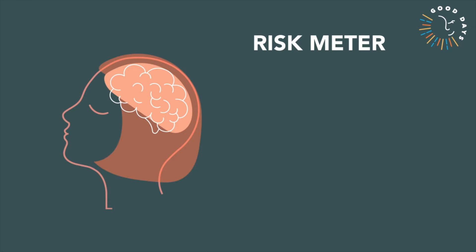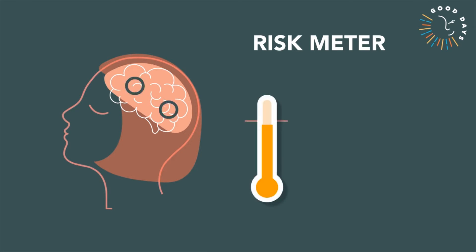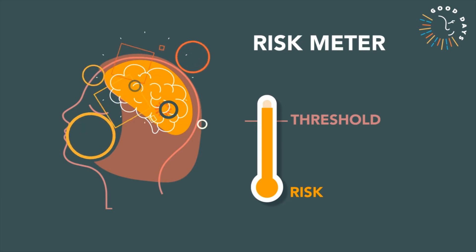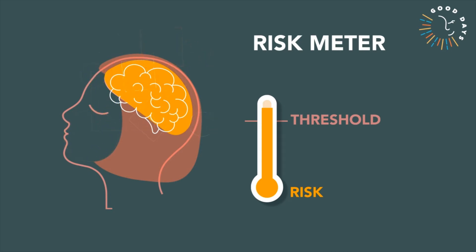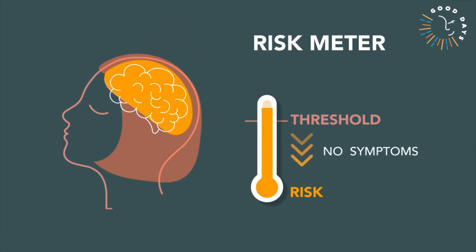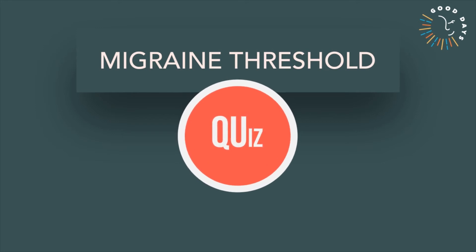We will now focus on migraine risk. To measure migraine risk, let's imagine a specific device: the risk meter. The risk meter would be similar to a bulb thermometer. The orange liquid indicates the level of risk at any time, and the red dash indicates the migraine threshold. If the orange liquid level goes down, risk is decreasing; if it goes up, risk is increasing. If it reaches the threshold, brain receptors get upset and symptoms appear. To summarize: on and above the migraine threshold, symptoms appear; below the migraine threshold, no symptoms. Stay below the migraine threshold to remain migraine-free.